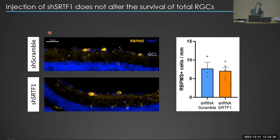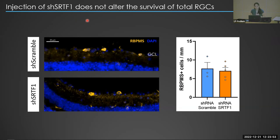I also examined the global population of RGCs to see how knockdown of this gene affected overall survival of all retinal ganglion cells, transfected or not. I found that it does not alter the survival of the total RGC population. One main conclusion is that since I'm only transducing about 20–25% of the total RGC population — because I dilute my virus — that's probably not enough to affect the total retinal ganglion cell population.